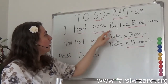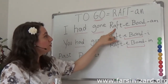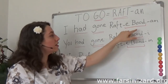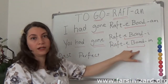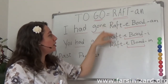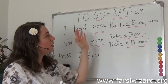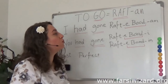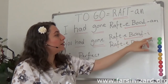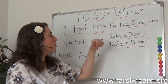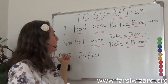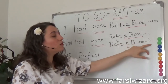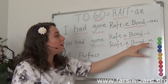So for 'I had gone,' your past stem is raft. You need 'a' — the linking vowel — and you need 'bud.' This part is fixed. You start with your past stem, put 'a,' then 'bud,' which is a fixed word, and then apply the ending based on the reference. If it is 'I,' the ending is 'am.' If it is 'you' singular informal, the ending is 'e.' If it is singular formal or plural, the ending is 'in.'